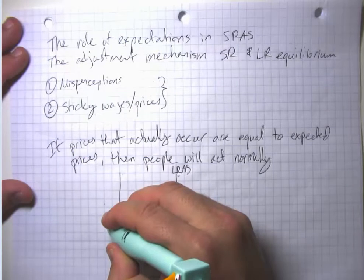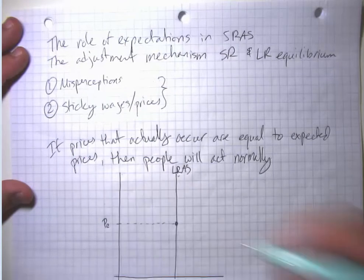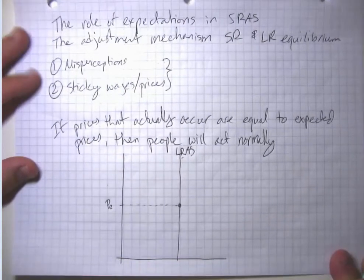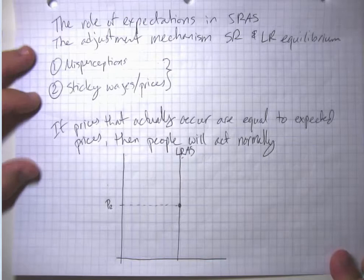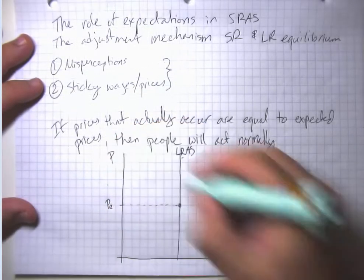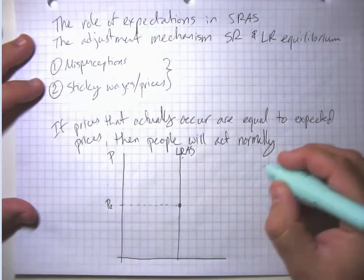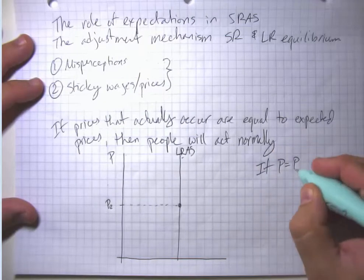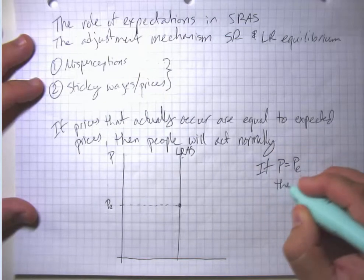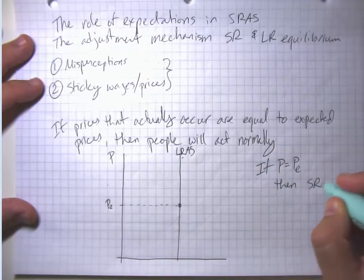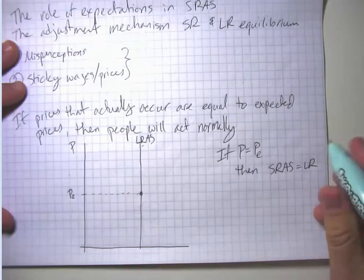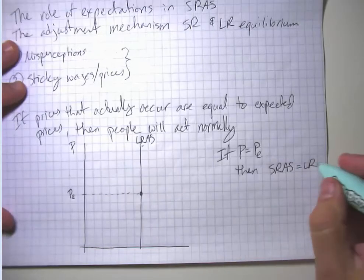So P sub E here is our expected price level. If prices come in at expectation — if actual prices equal P sub E — then short-run aggregate supply equals long-run aggregate supply.